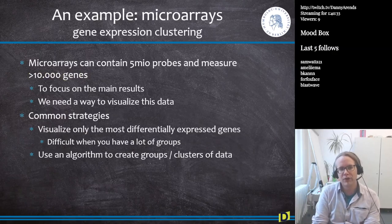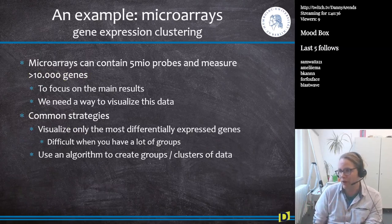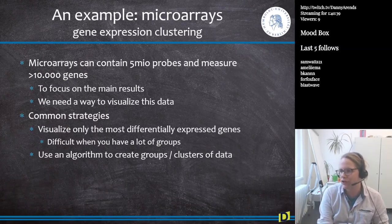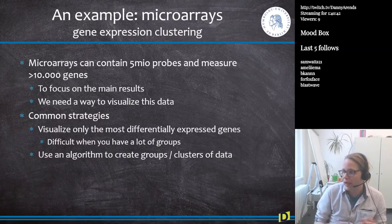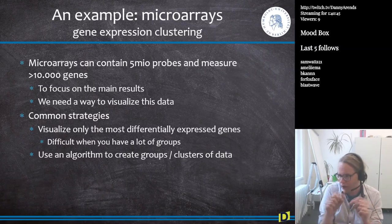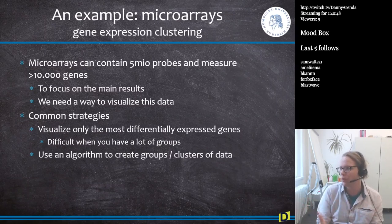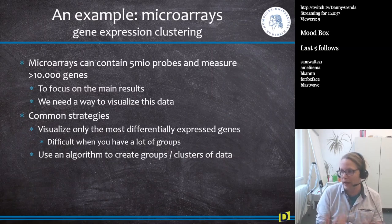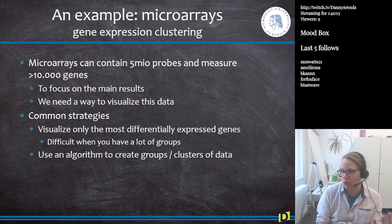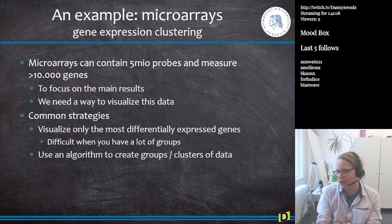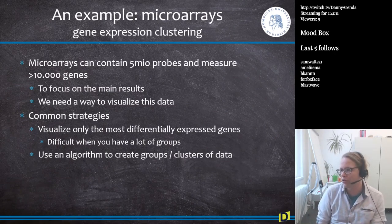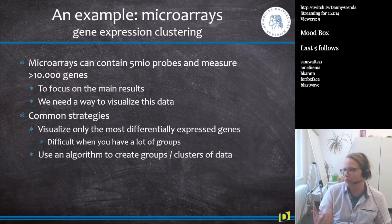The next step is gene expression clustering. Microarrays have 5 million probes measuring more than 10,000 genes, and we need to focus on the main results — we can't just report individual genes. There's a holistic approach: we need to take into account all of the genes on the microarray. We can't make 10,000 box plots and look at each one. So the most common strategy is to visualize the most differentially expressed genes.